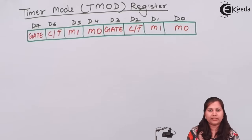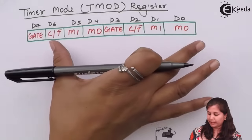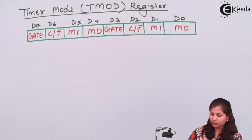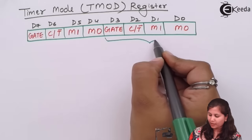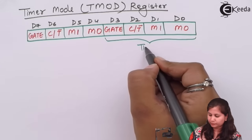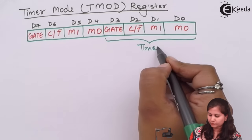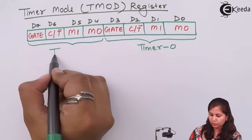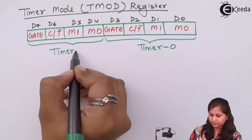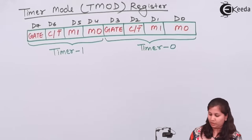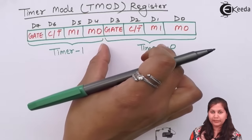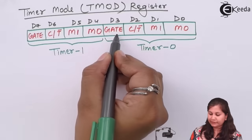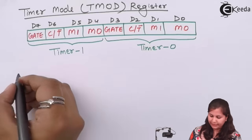The timer mode register TMOD is an 8-bit register with 8 bits specified. Out of these 8 bits, the lower 4 bits are for Timer 0 and the upper 4 bits are for Timer 1. Each of these 4-bit sections has specific functions. Bits D7 and D3 are for the Gate.